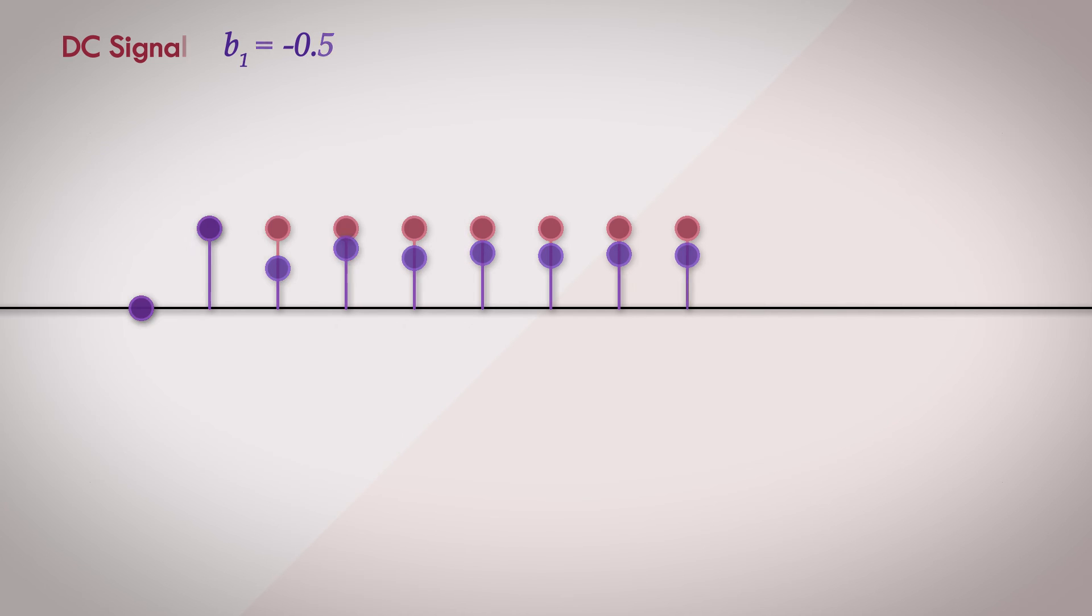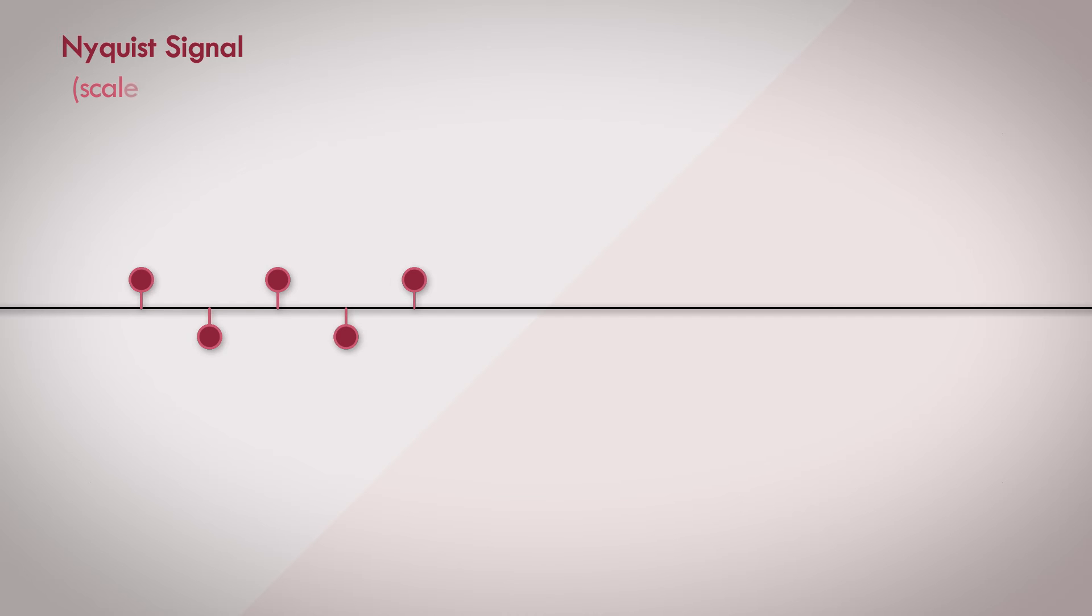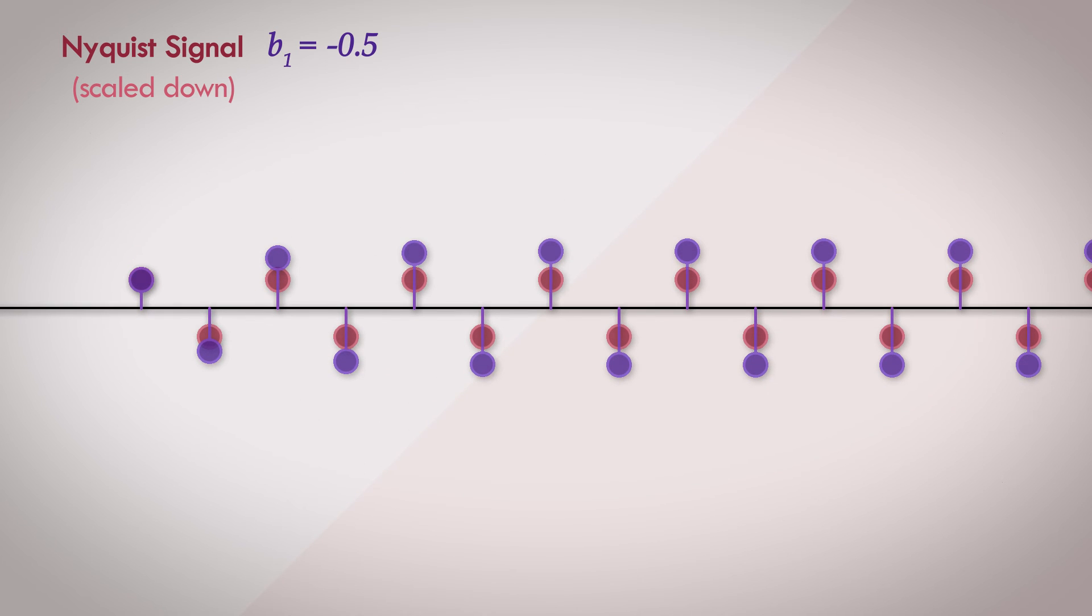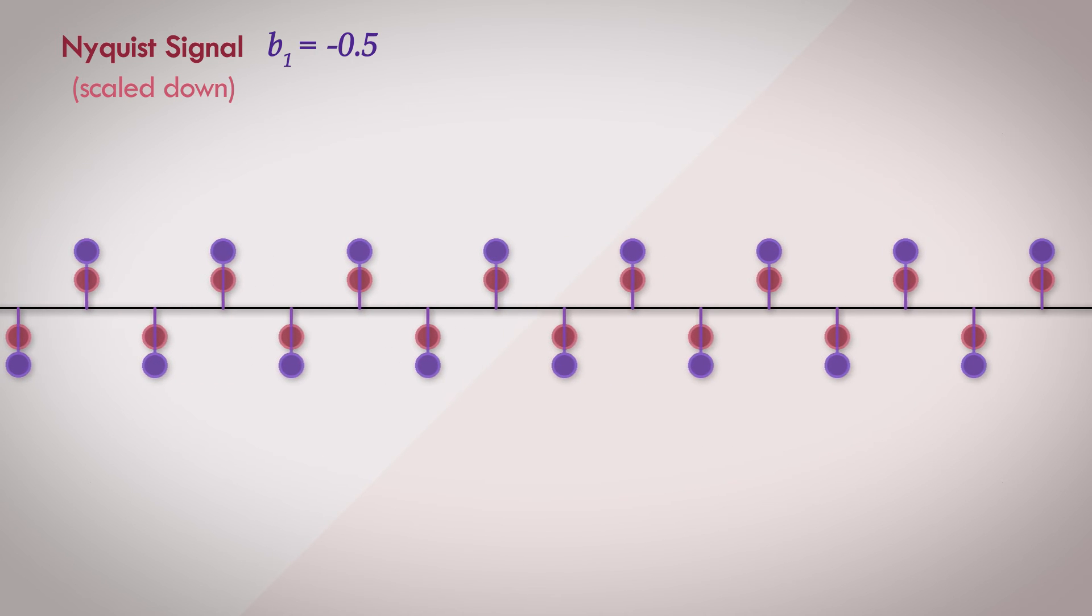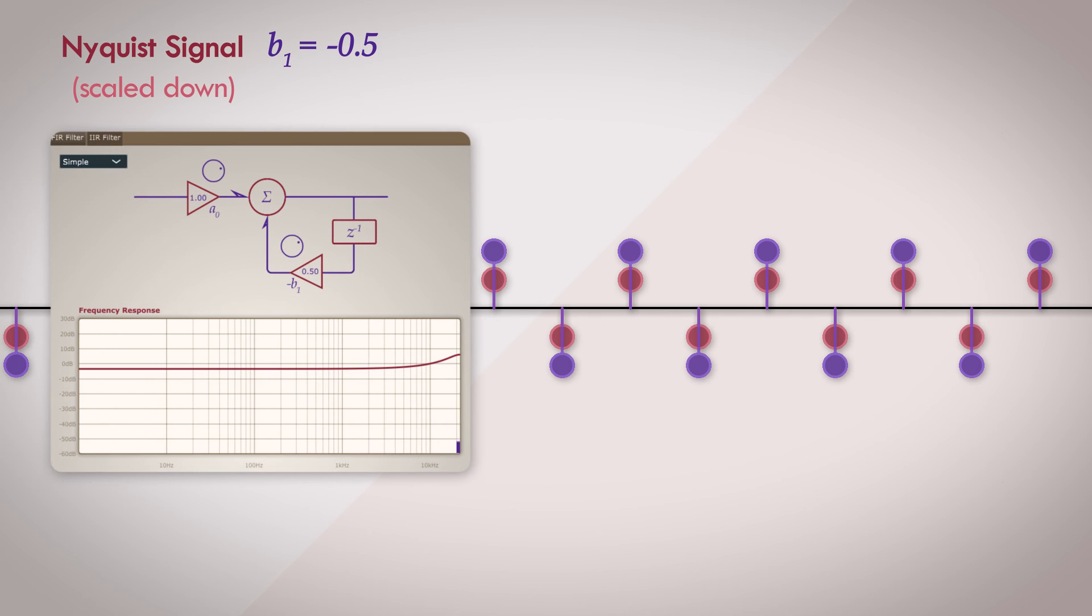Let's try that with the Nyquist signal as the input this time. A Nyquist signal is the highest frequency that can be represented for a given sample rate, and the signal oscillates between 1 and negative 1 every sample. Passing this through the same filter, we get this. The output signal grows in amplitude and stabilizes after a short time. The frequency response indicates the same, a boost in gain at higher frequencies.